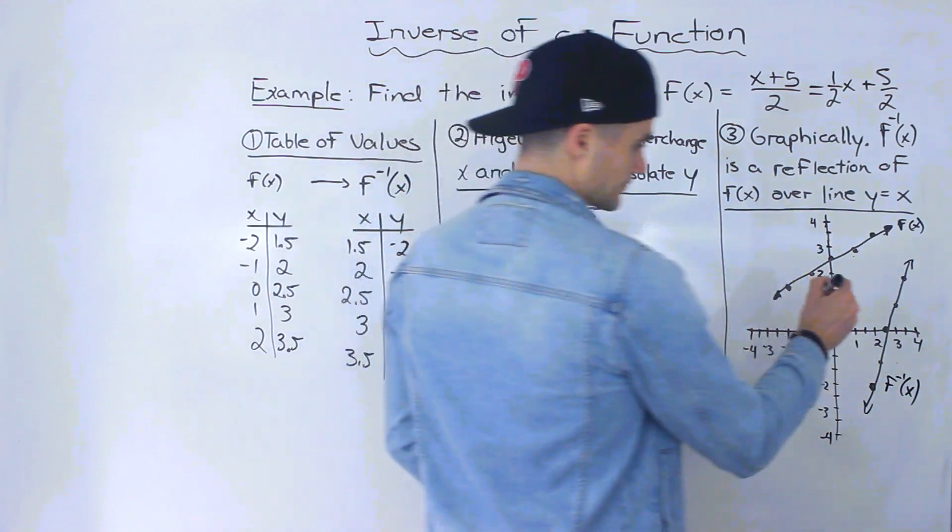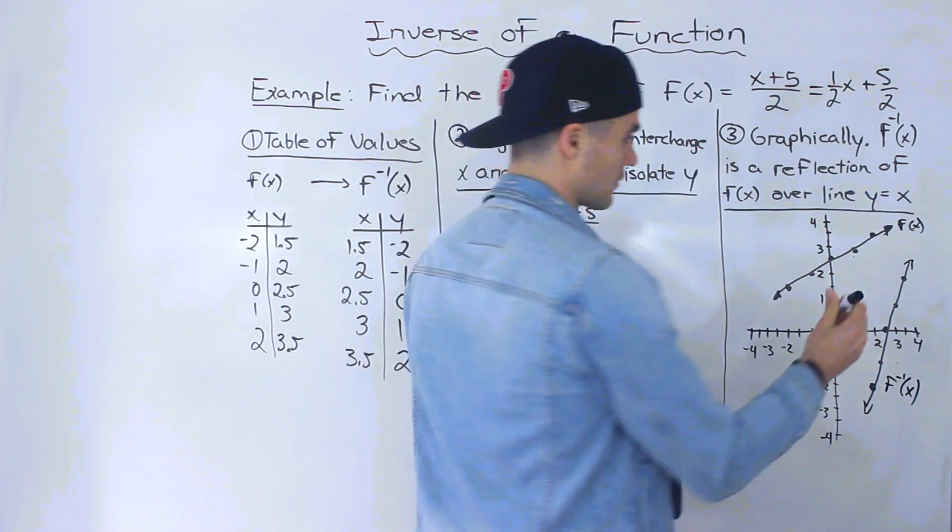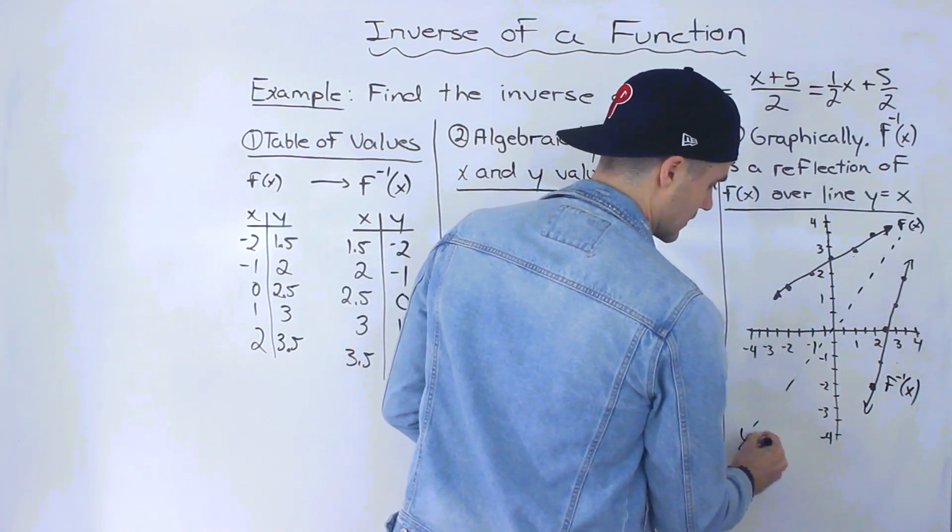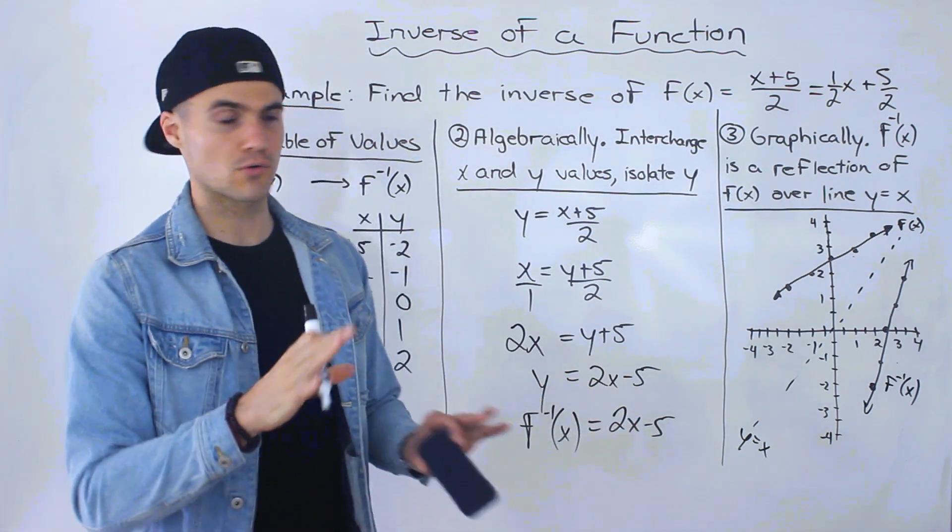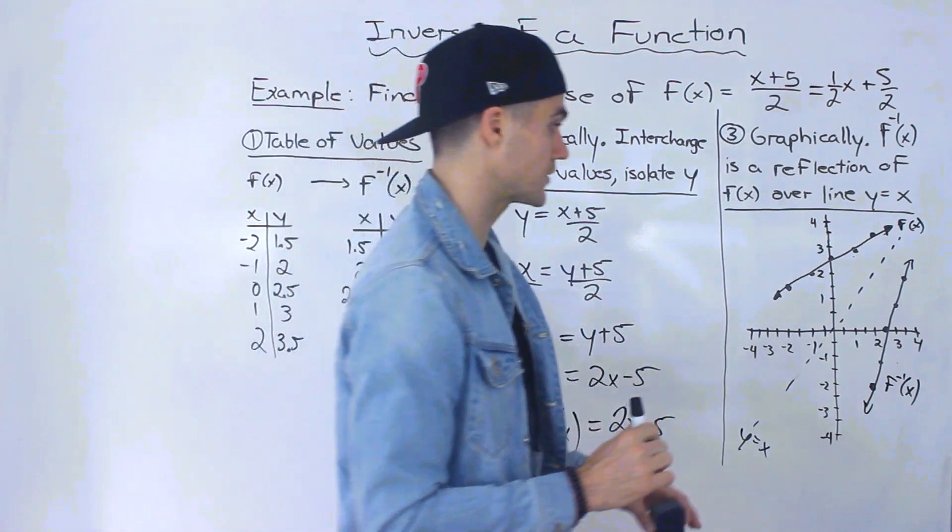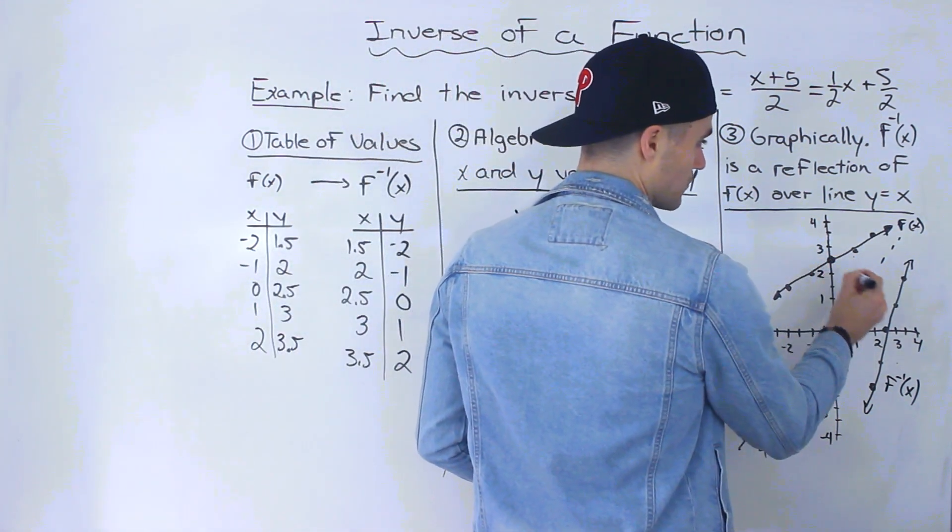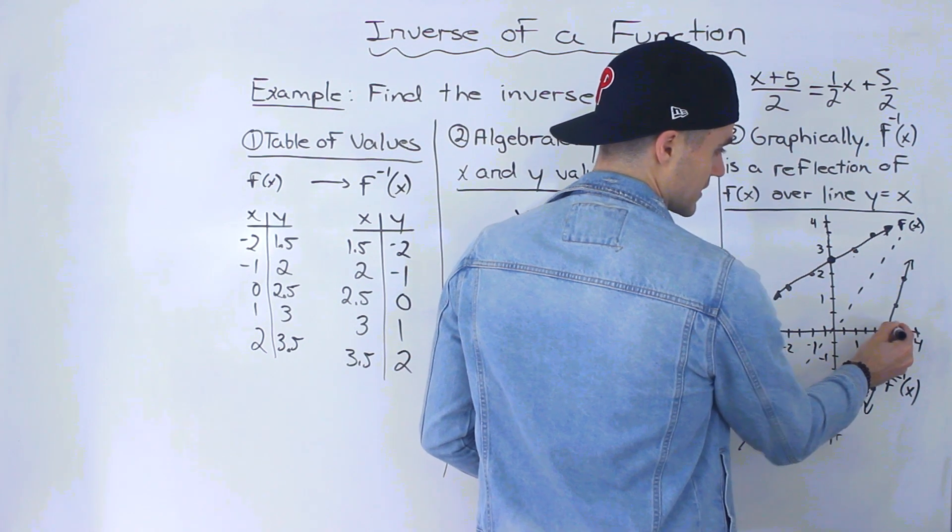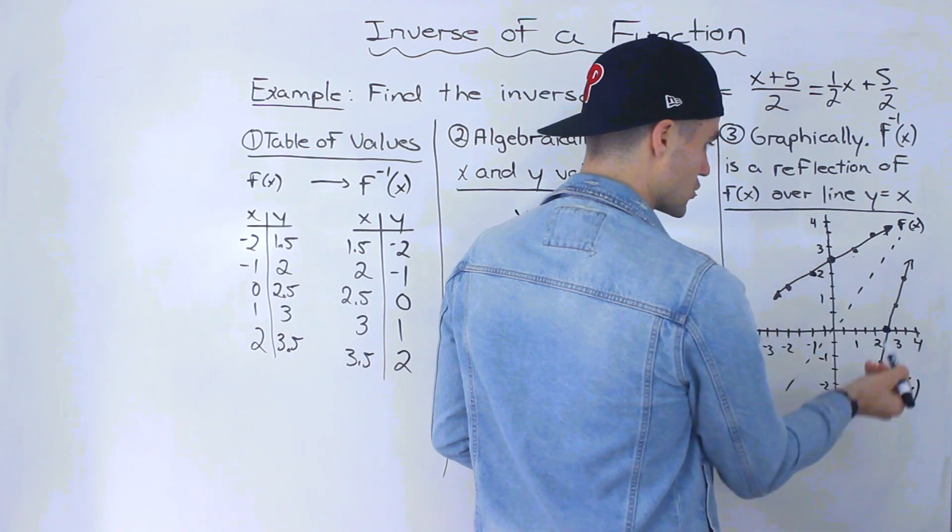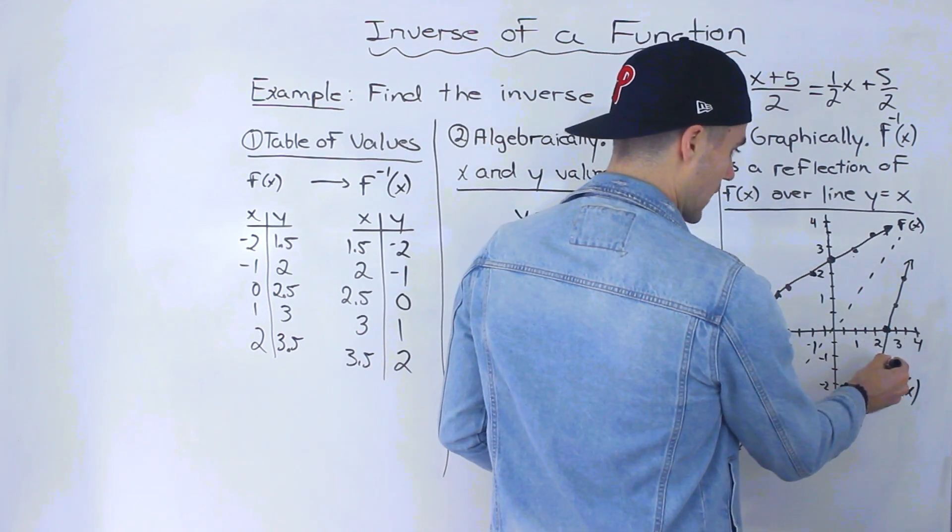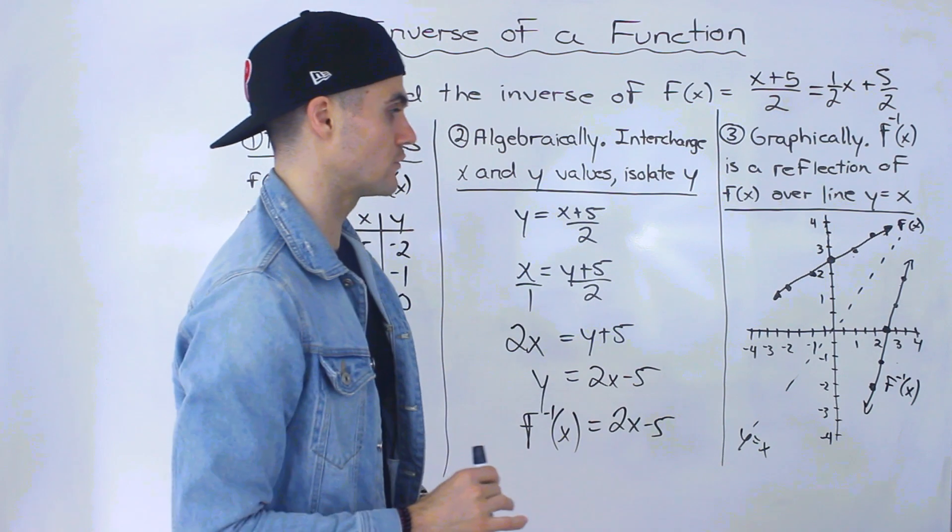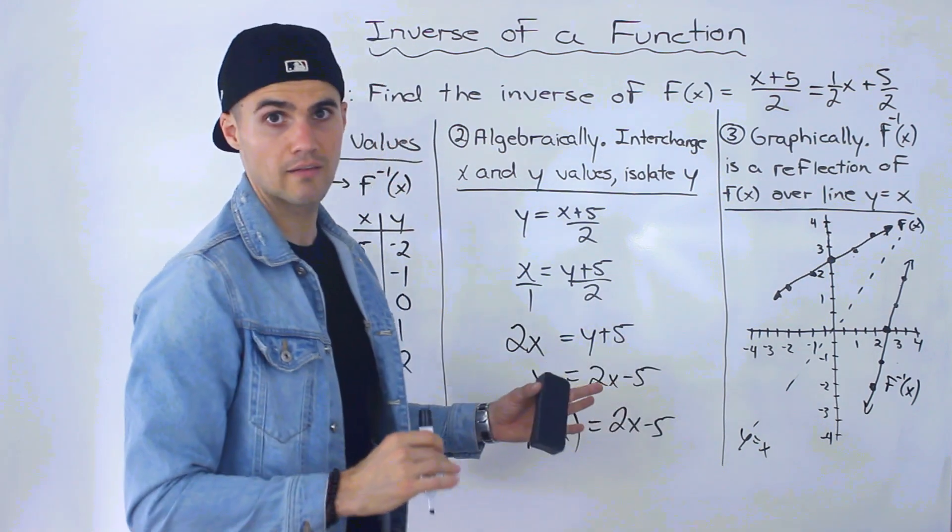And if you notice, this and this are reflections of each other over the line y equals x. The function and the inverse are reflections of each other over the line y equals x, meaning that you're just switching the x and y values. So for example, this value 0 and 2.5 gets reflected to here, 2.5 and 0. Or this value here, negative 1 and 2 gets reflected to 2 and negative 1. So all of the points are reflections of each other over that line y equals x.